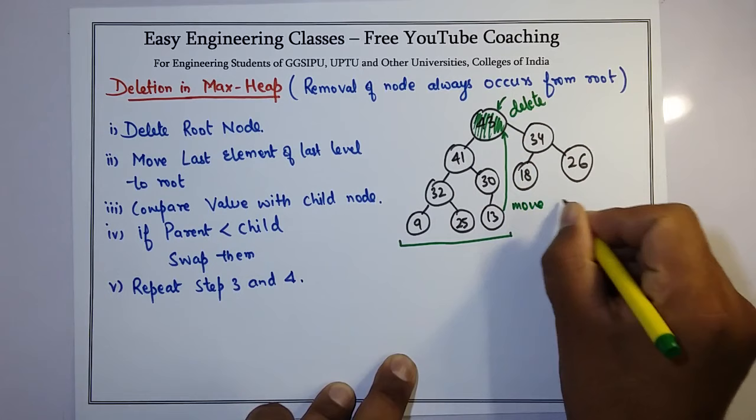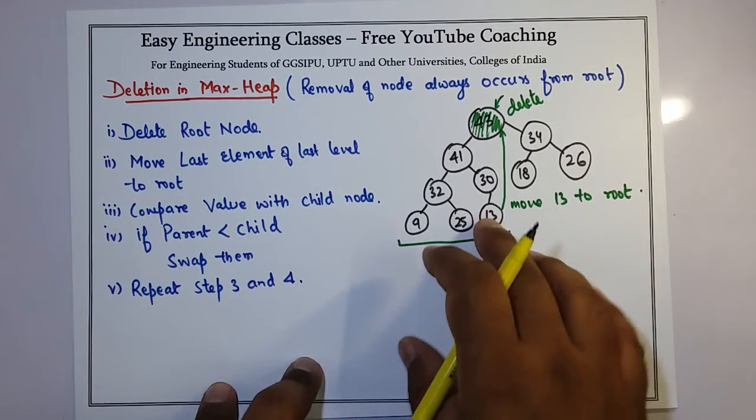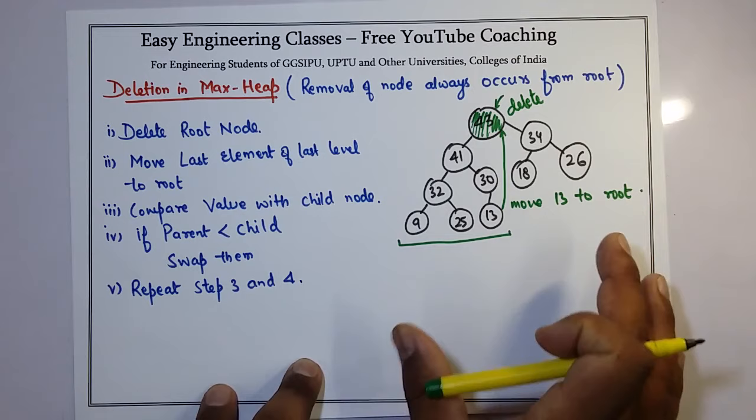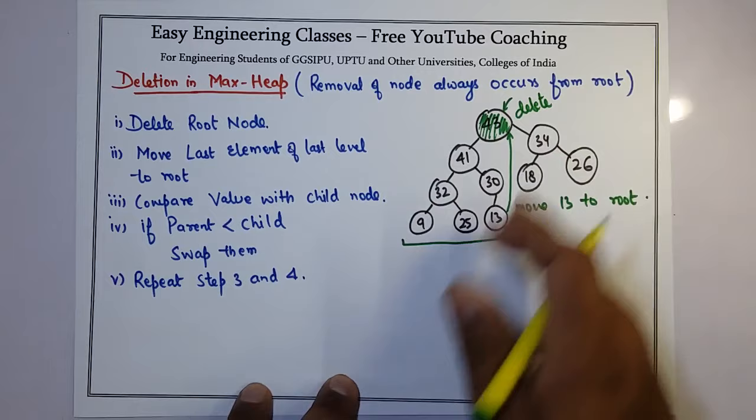After moving 13 to root, you have to see whether the max heap property holds or not and transpose the elements accordingly. Let's see what happens after we delete and move it.